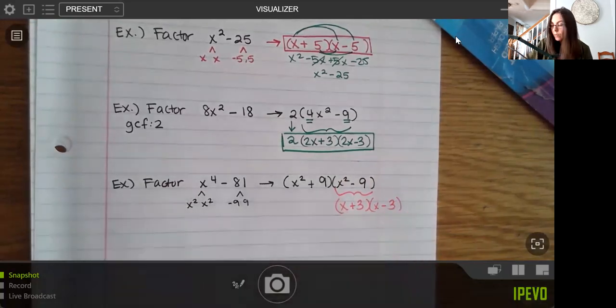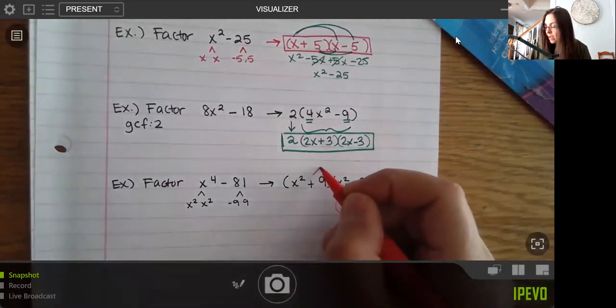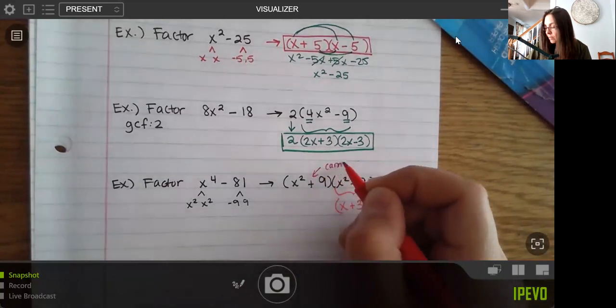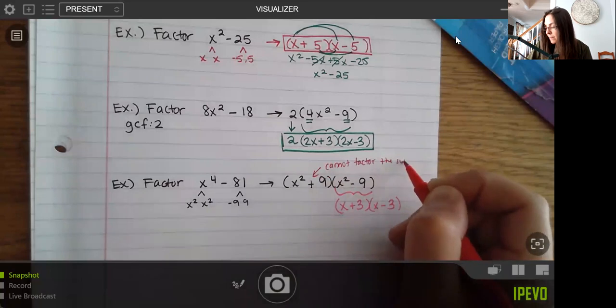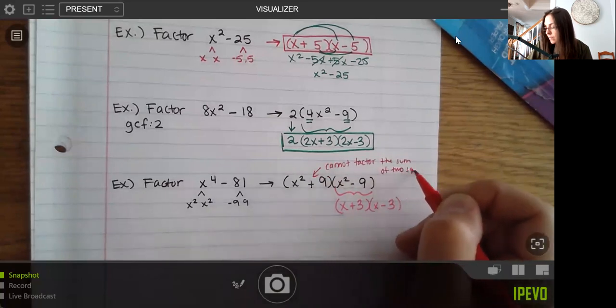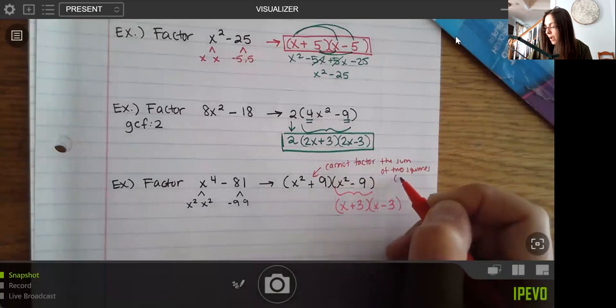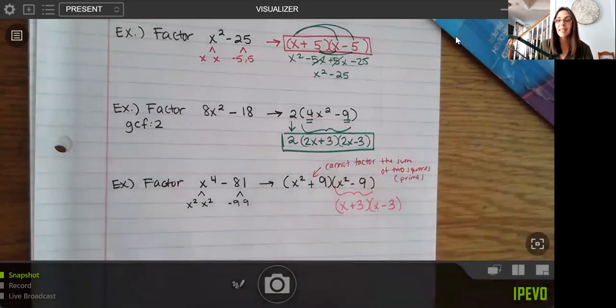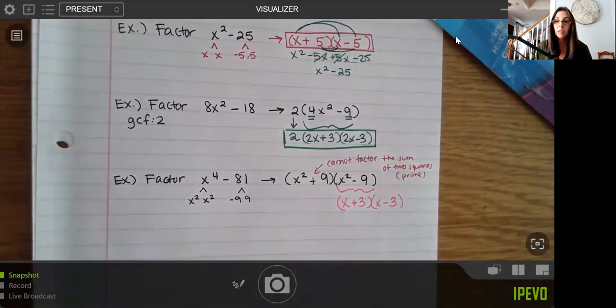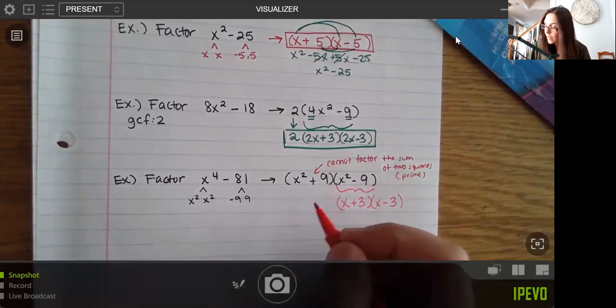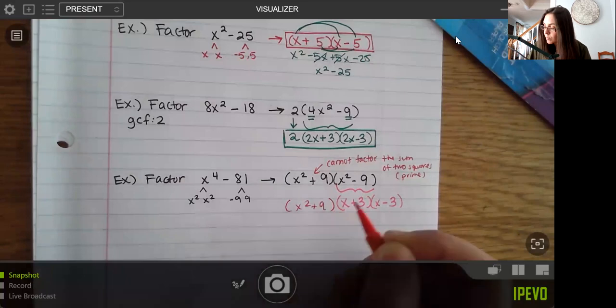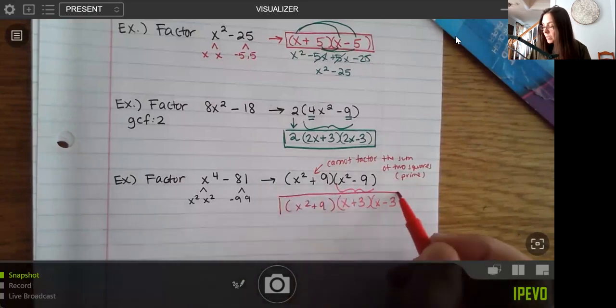But I will tell you now that you cannot factor the sum of two squares. We say that that is prime. So polynomials that cannot be factored are prime. And they do exist in all cases. So sometimes we just can't factor something. And anytime you have the sum of two squares, it can never be factored. So that's just going to come straight down here. And this would be my final answer.